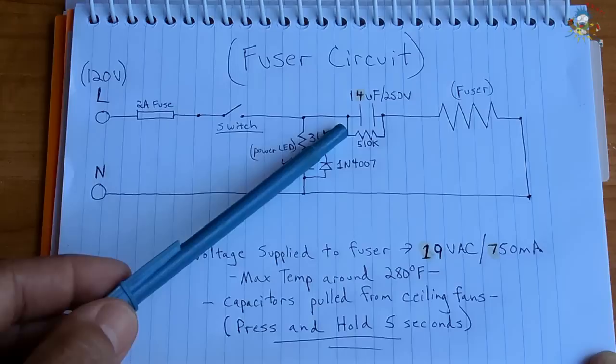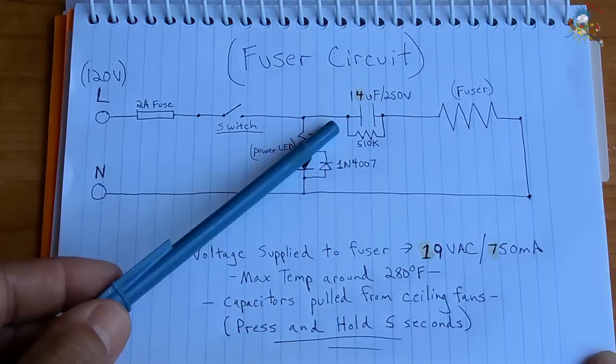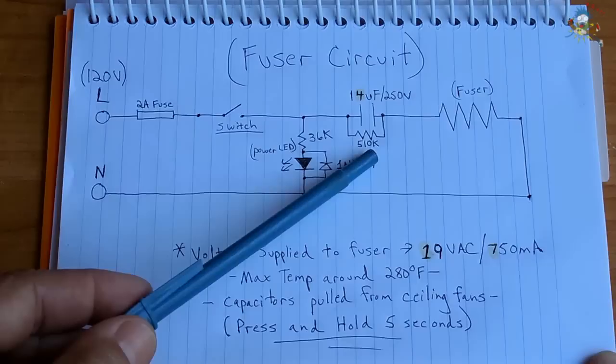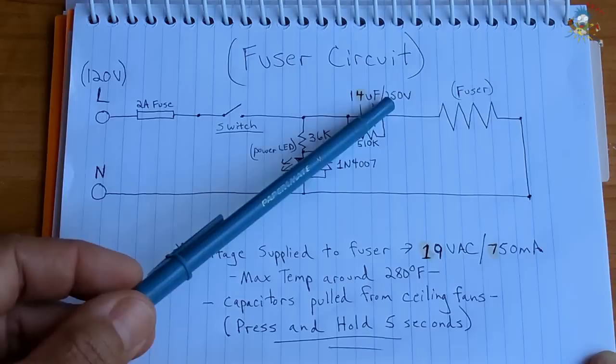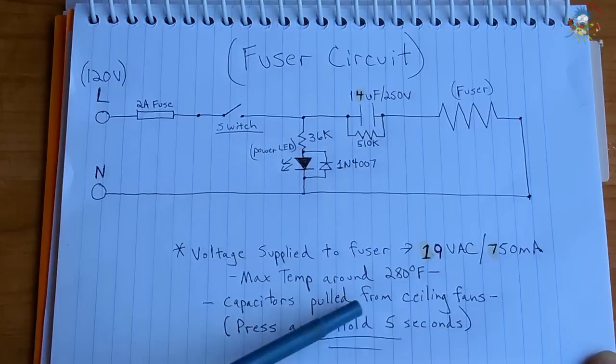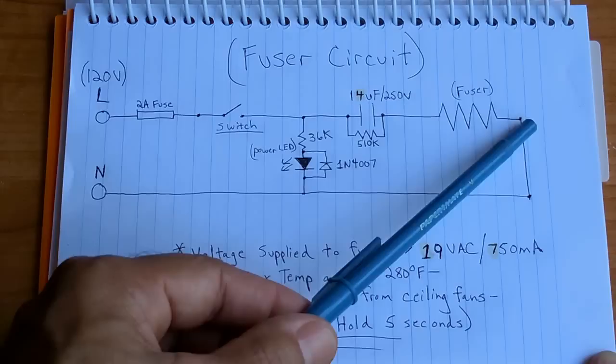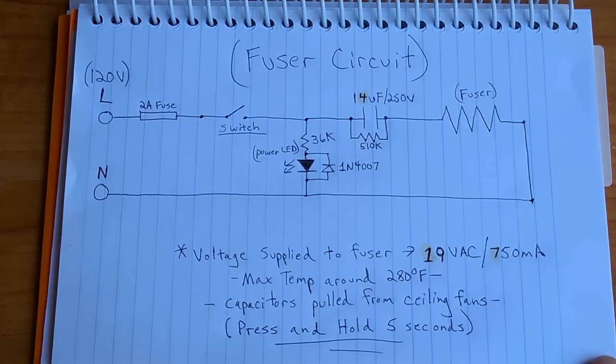From the junction of the AC line after the switch and the power indicator, you will connect up a 14 microfarad, 250 volt capacitor. Across that capacitor is a 510k ohm, half watt bleed resistor. The capacitor voltage must be rated a minimum of 250 volts, and the capacitors that I used were pulled from old ceiling fans. After the capacitor, the current then flows into the fuser, and then the other side of the fuser connects to the neutral line.